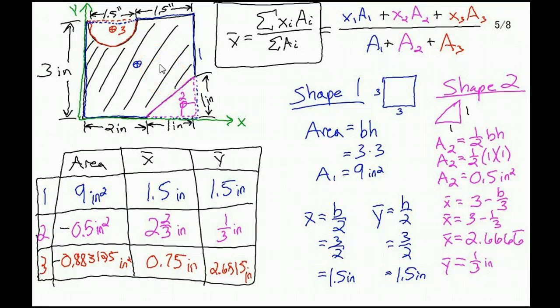I color coordinated this to try to keep track of everything, so everything with the square is in blue, everything with the triangle is purple or fuchsia or pink, and everything with the semicircle is in red. First things first, let's deal with the simple shapes. I'm going to do the subtractive method here, where I start with a larger shape and just cut bits out of it. That is the easiest way to approach this one.